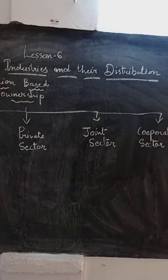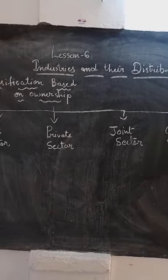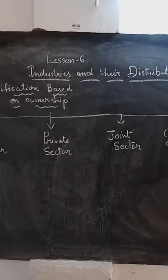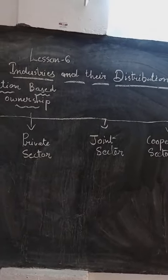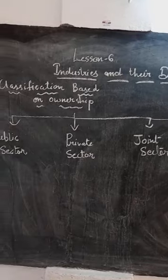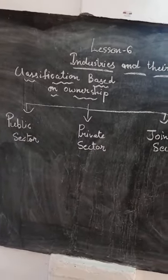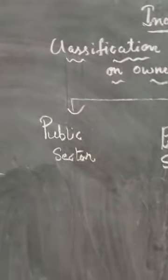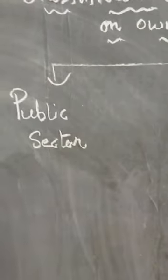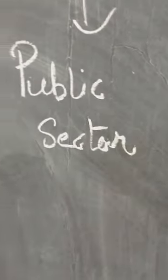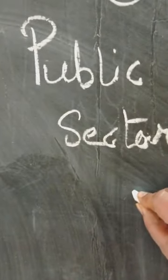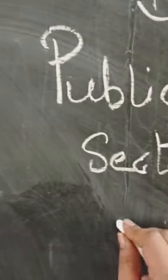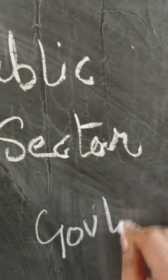We have already started this chapter, students. In this chapter we have discussed the classification based on ownership. We will discuss that today. First, we have the public sector. What are the public sector industries? This sector is governed by the government — the owner of the industry is the government.